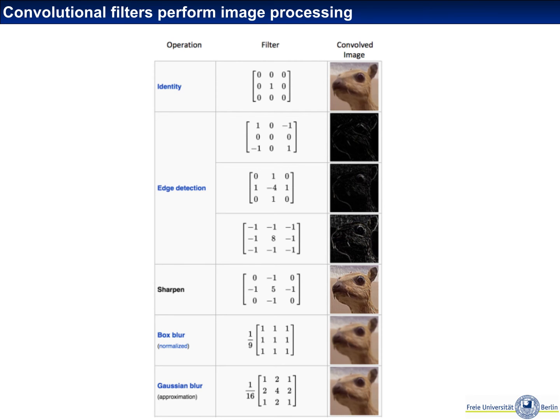Convolutions with specifically designed filters have been used for a very long time in image processing and are to be found in image processing tools like Adobe Photoshop or Lightroom, where you have essentially tools to modify your image by running certain convolutional filters over them.